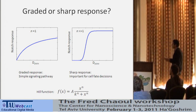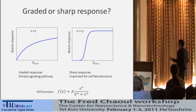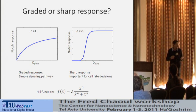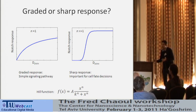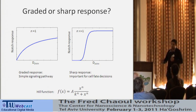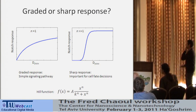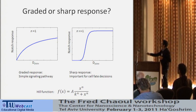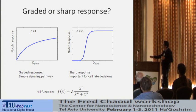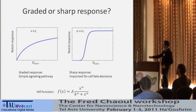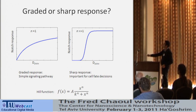To fit these response functions, we use phenomenological Hill functions. The exponent N: if N equals 1, this corresponds to a graded response; if N is much bigger than 1, you get a non-linear switch-like response.